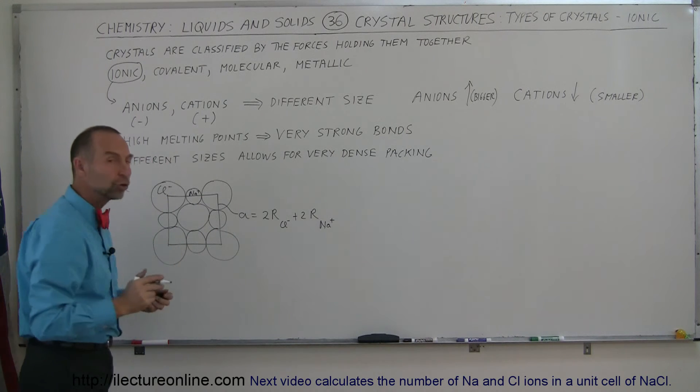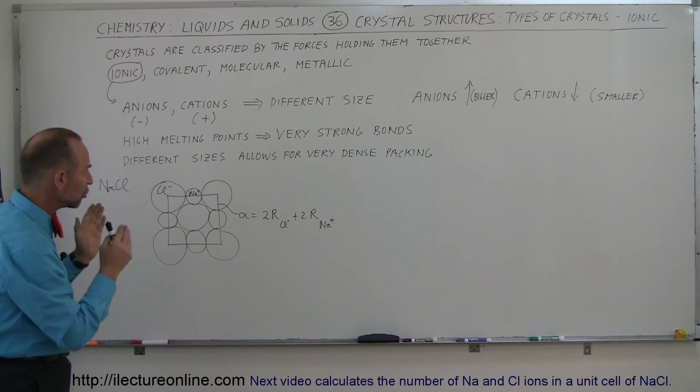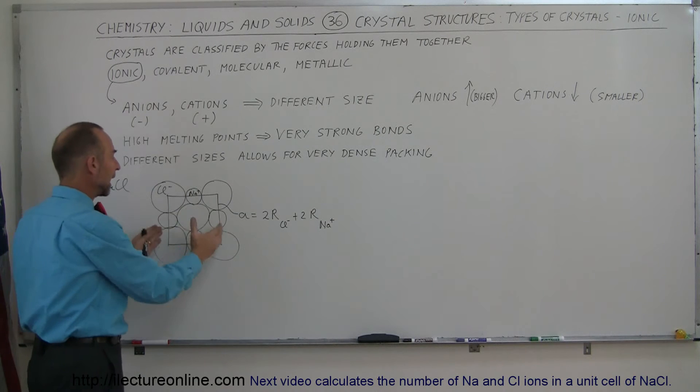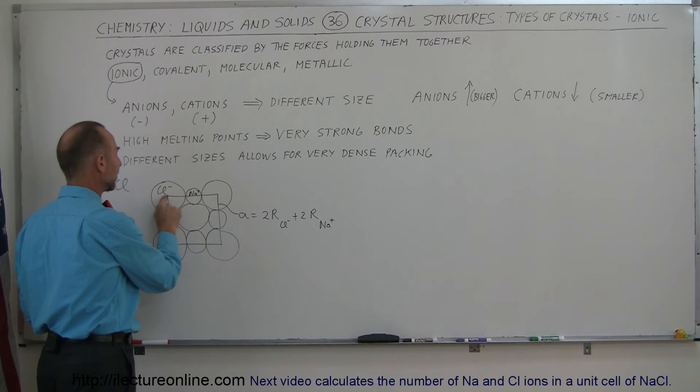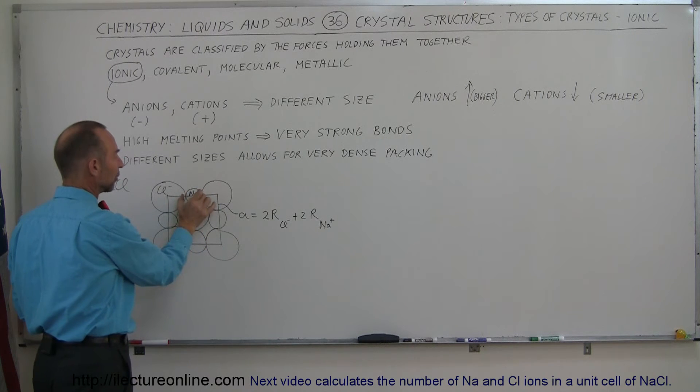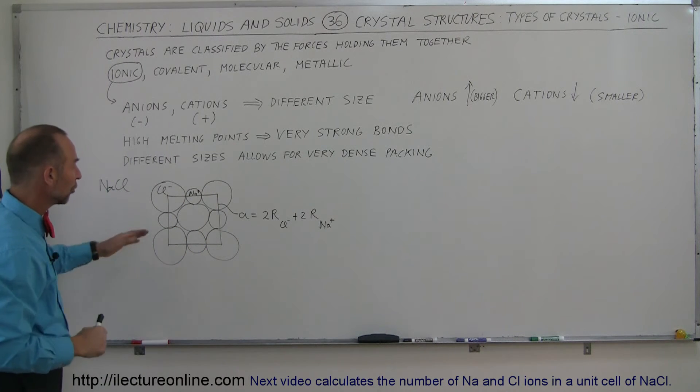They're arranged in a simple cubic structure, as we call it, and you can see that the unit cell encompasses the atoms like that, so that we go from the center of the chlorine ion to the center of the next chlorine ion, and encompassing the full diameter of the sodium ion.